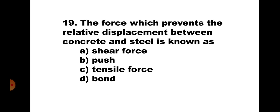Question 19. The force which prevents the relative displacement between concrete and steel is known as: A. Shear force, B. Push, C. Tensile force, and D. Bond. This is the definition of bond — the force which prevents relative displacement between concrete and steel is known as bond. Hence, the correct answer is D. Bond.